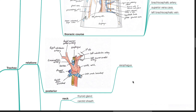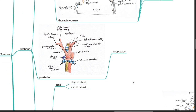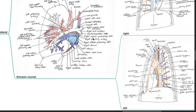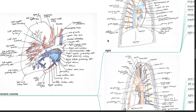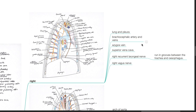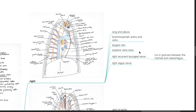Posterior relations: the esophagus. Lateral relations: at the neck, the thyroid gland and the carotid sheath. In the thoracic course, on the right side: lung and pleura, brachiocephalic artery and vein, azygous vein, superior vena cava, and the right recurrent laryngeal nerve, which runs in a groove between the trachea and the esophagus.